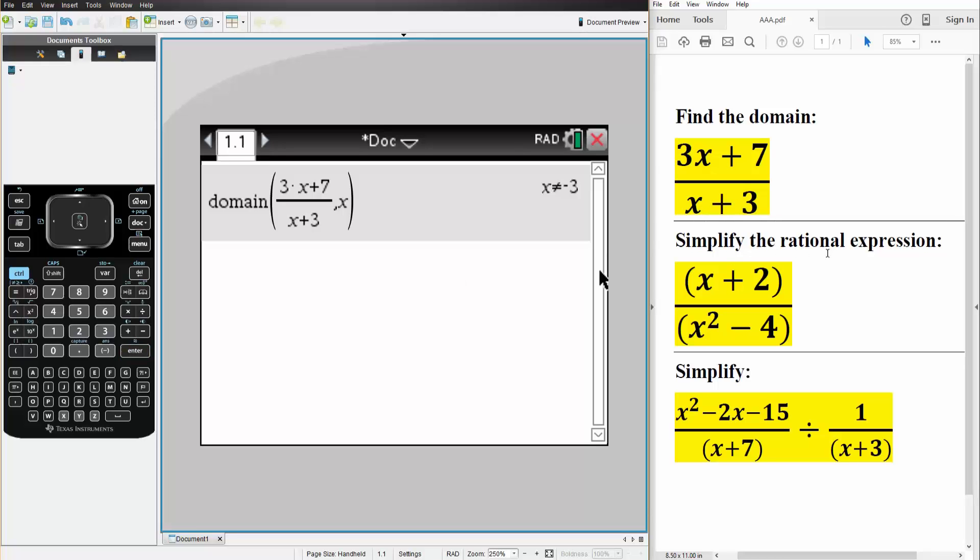Next is to simplify the rational expression. If we do this by hand, we would solve this by factoring this term out and seeing if something can cancel. But with a TI, we don't really need to worry about that, we just write what we have. So we have x plus 2 divided by x squared minus 4, like this.